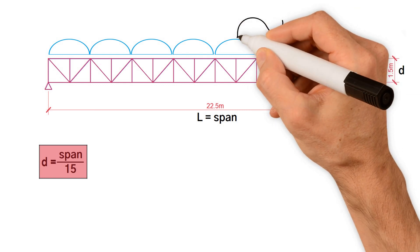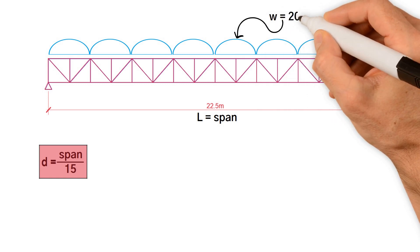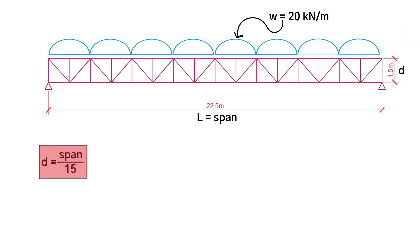There's a distributed load on the top, call it W, equal to 20 kilonewtons per meter. We've got 20 kN/m as a UDL.